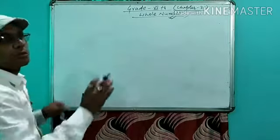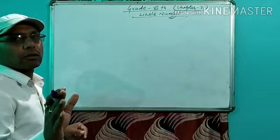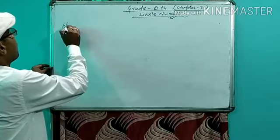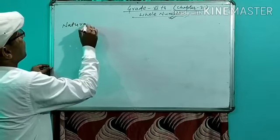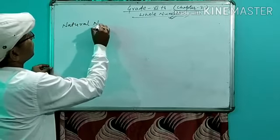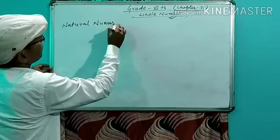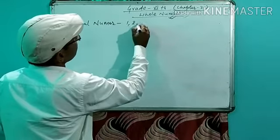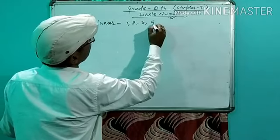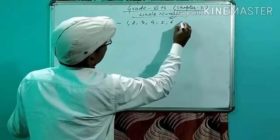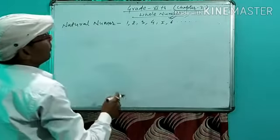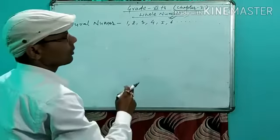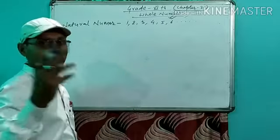At first, to understand about whole numbers, we have to know about natural numbers. Counting numbers are called natural numbers, which start from 1 and go ahead endlessly.